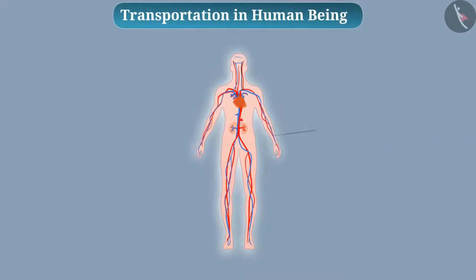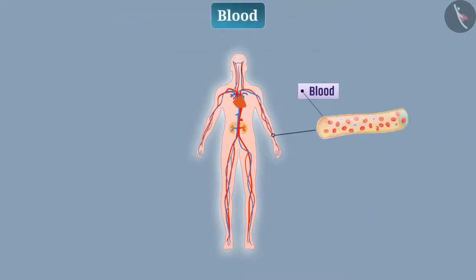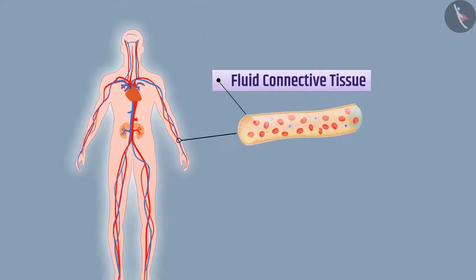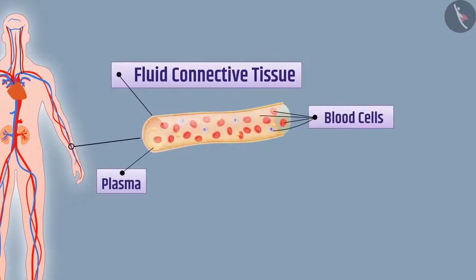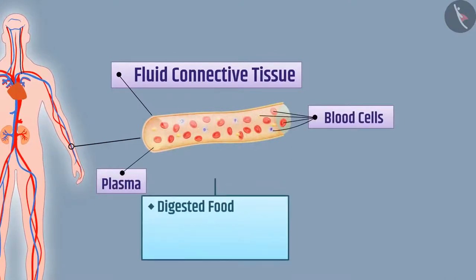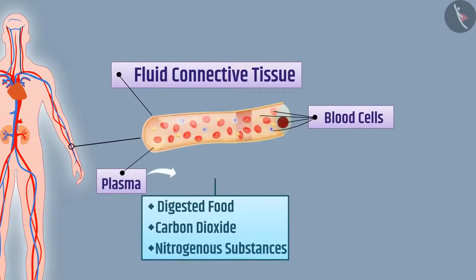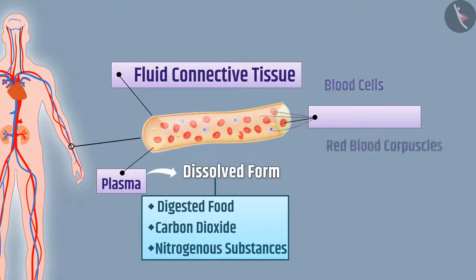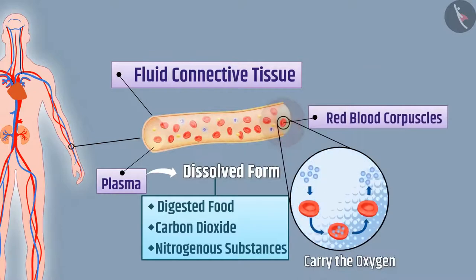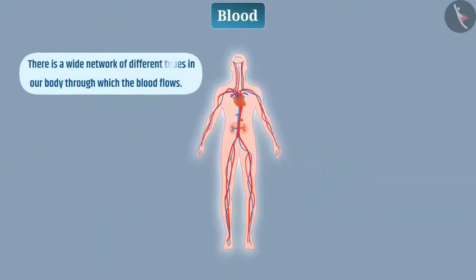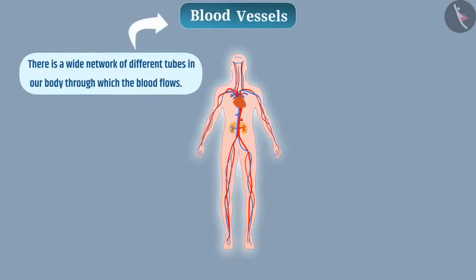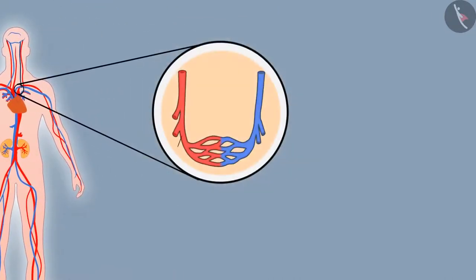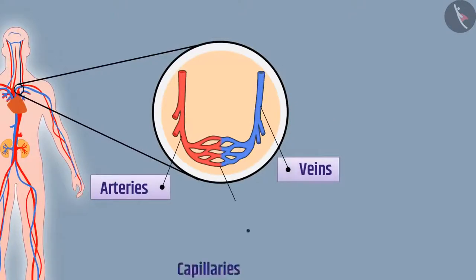Transportation in human beings. Blood carries out transportation in humans. Blood is a fluid connective tissue which is made up of plasma and blood cells. Plasma carries digested food, carbon dioxide, nitrogenous substances and other hazardous substances in dissolved form, while red blood corpuscles carry oxygen. There is a wide network of different tubes in our body through which the blood flows — we call them blood vessels. There are three types of blood vessels: arteries, veins and capillaries.